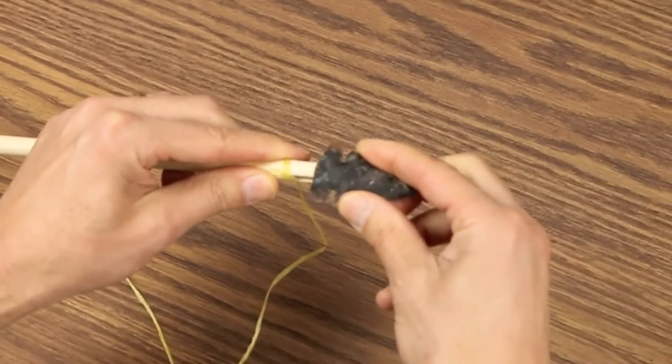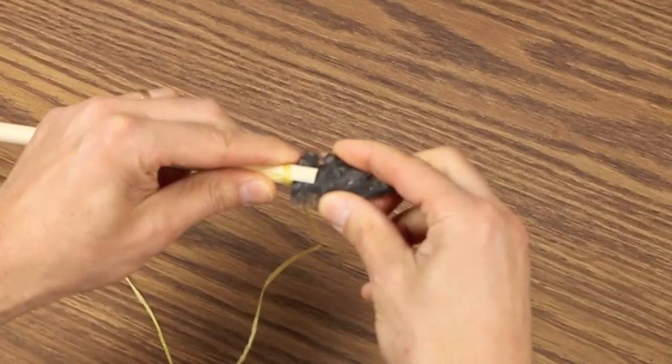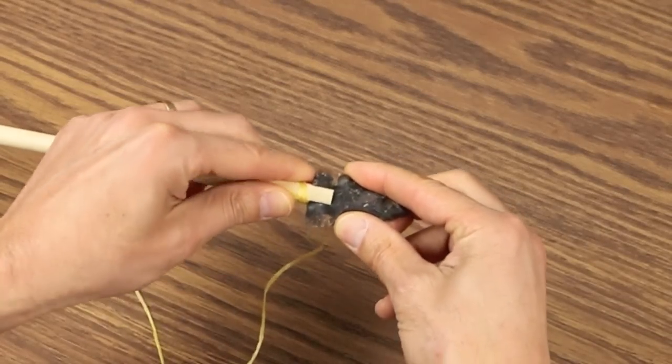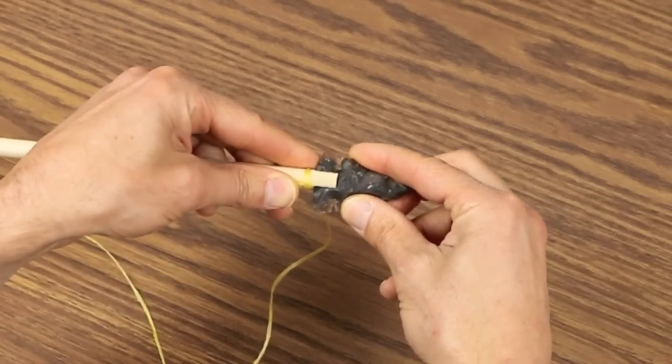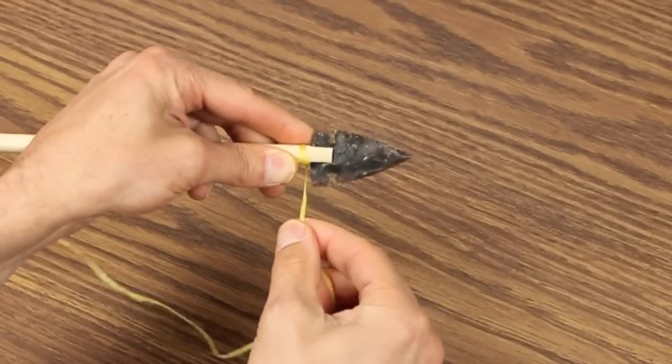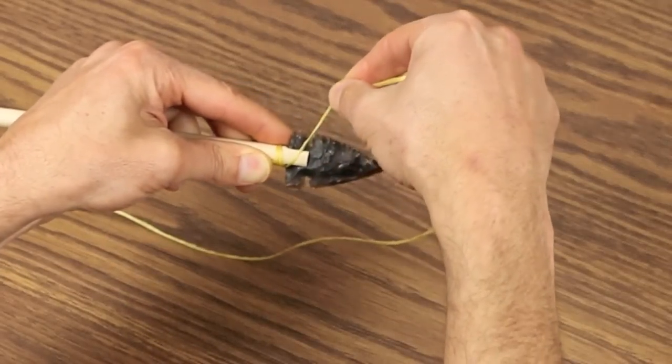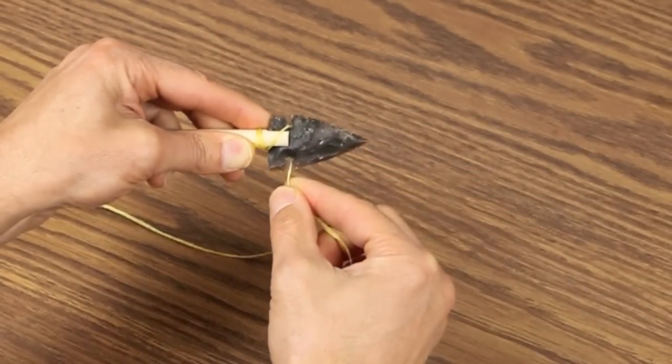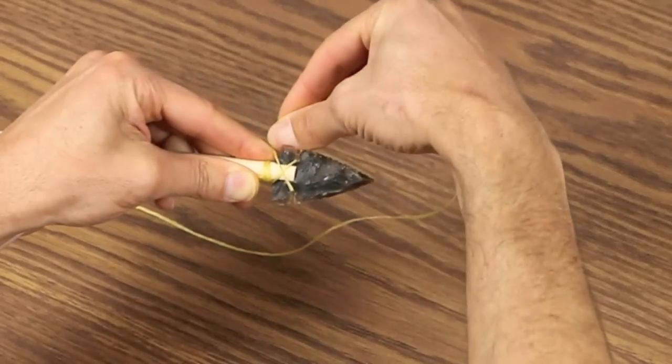Take your arrow, put it in the slot, slide it all the way down, center it, hold it with one finger gently, and then wrap the sinew through the notches in the arrow, going behind, gently coming back, and crossing over.